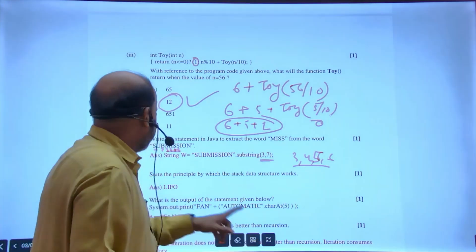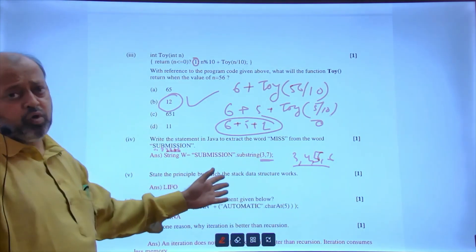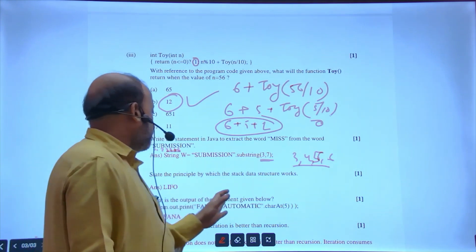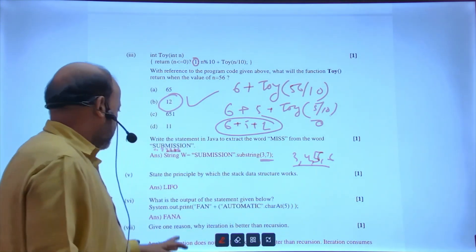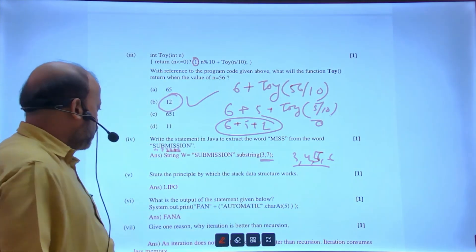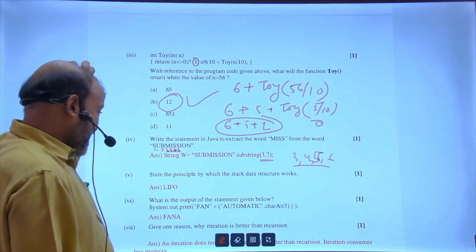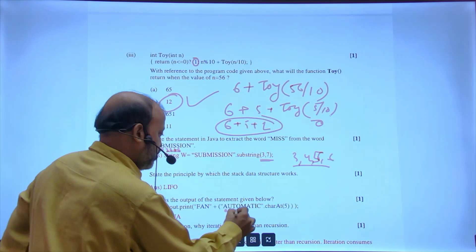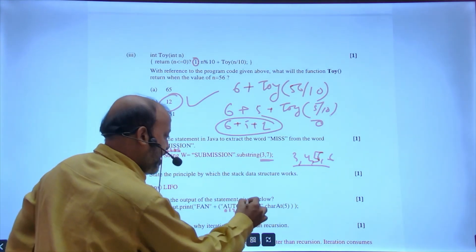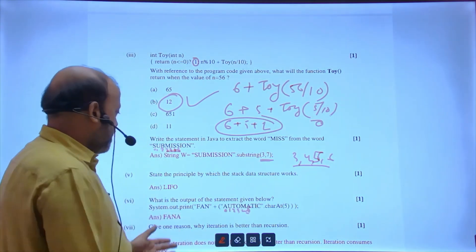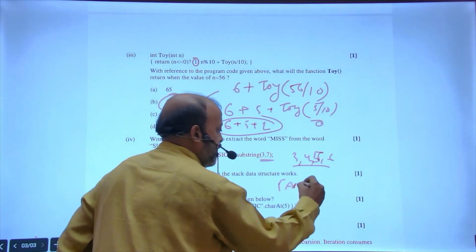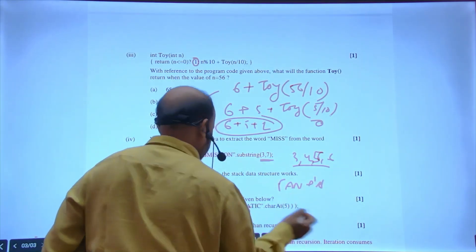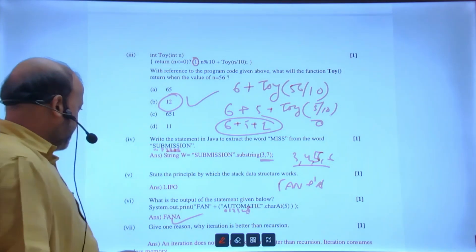Next: principle of which stack is LIFO, queue is FIFO. What is the output of the statement given below: 'fan' plus automatic.charAt(5). automatic(5) is 0, 1, 2, 3, 4, 5, it is 'a'.